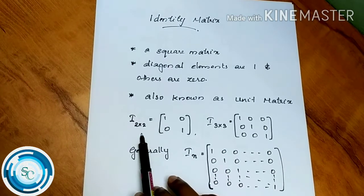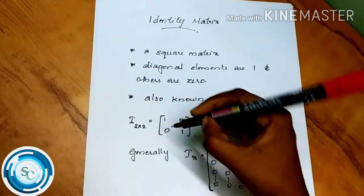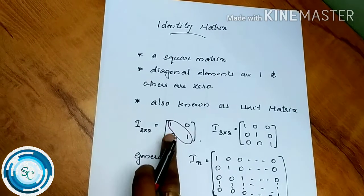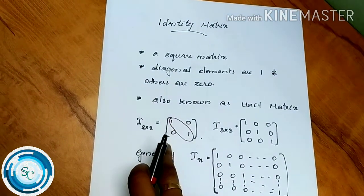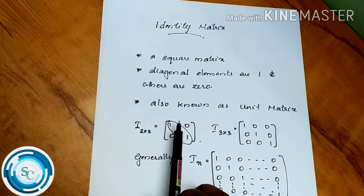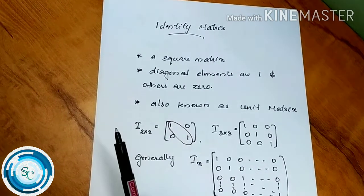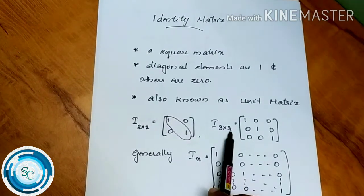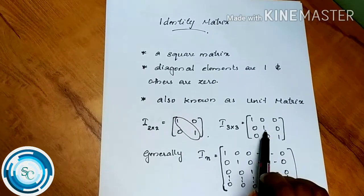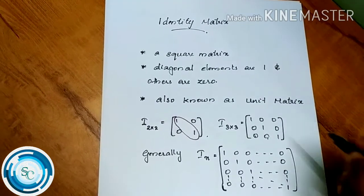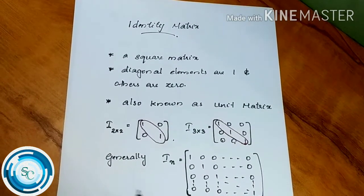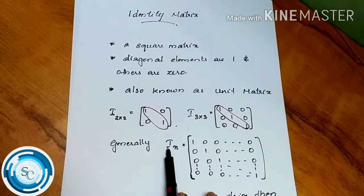For a 2×2 identity matrix, it is a square matrix where the diagonal elements are all 1 and the other elements are zero. The other elements form what we call the unit matrix.